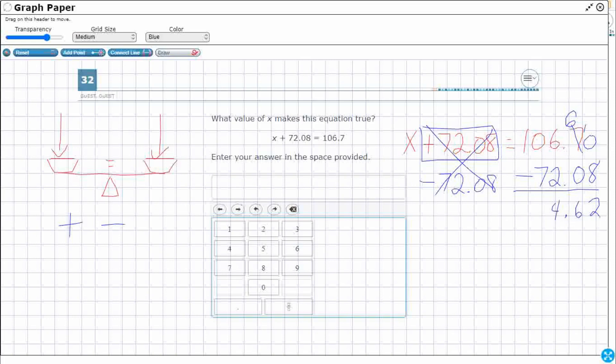Ten minus seven is three. All right. So 34.62 is what I came up with.